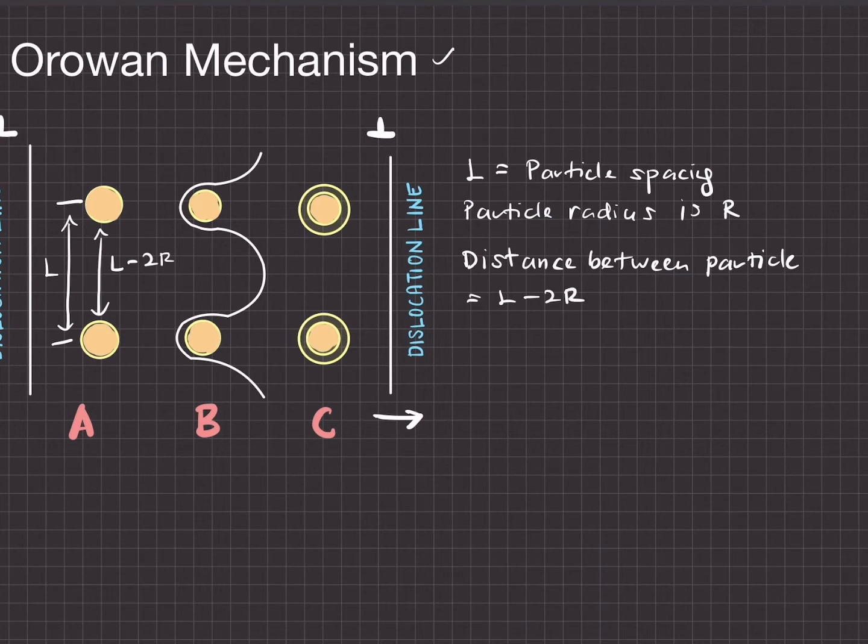This mechanism is quite similar to dislocation multiplication, known as the Frank-Read mechanism.